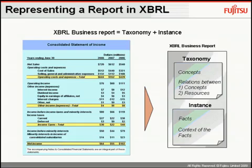The taxonomy is simply a way to describe and classify the reporting concepts within a financial statement. A concept is simply a piece of information in the statement, like sales or selling, general and administrative expenses. The taxonomy is simply a collection of all these concepts and how they're related.